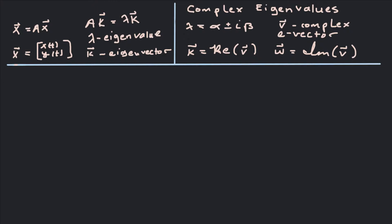Whenever we have complex eigenvalues, they're going to be lambda of the form alpha plus or minus i times beta. Those are going to be our eigenvalues, and V is going to be the corresponding complex eigenvector, so it's going to have complex numbers in the eigenvector itself. The real part of that eigenvector gives us the K vector — our first eigenvector used in the solution. And W is going to be the imaginary part of that complex eigenvector — that's the second eigenvector we'll use.